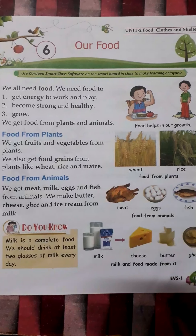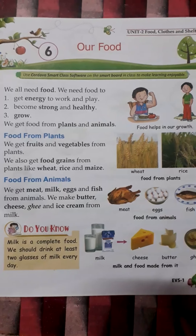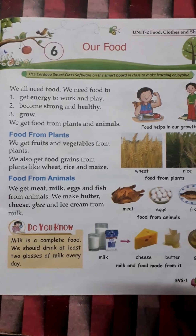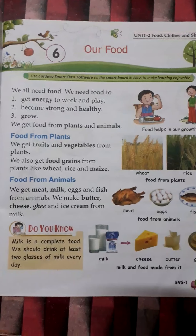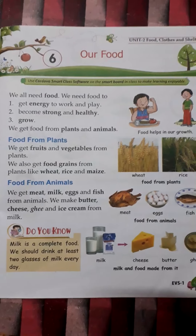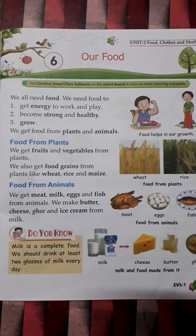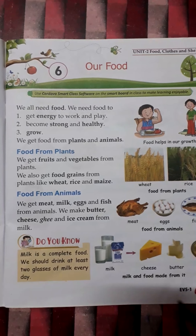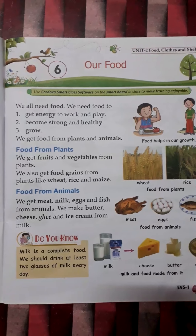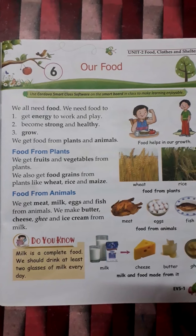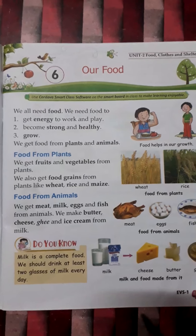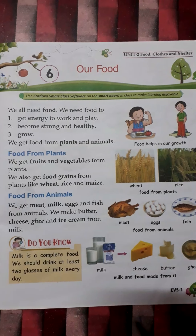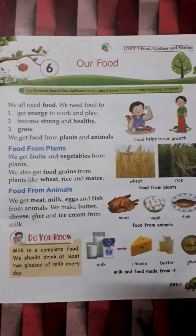Toh hum food kya eat karte hain? Because it helps us in growth. It helps us to prevent from disease — disease se hama bachata hai. Our bones and muscles ko bhi strong karta hai. Jab hum achi food eat karte hain, jo nutritions wale food hote hain, toh hamare bones or muscles bhi strong hote hain. Ye grow karne mein help karte hain, healthy banata hai, energy deta hai.